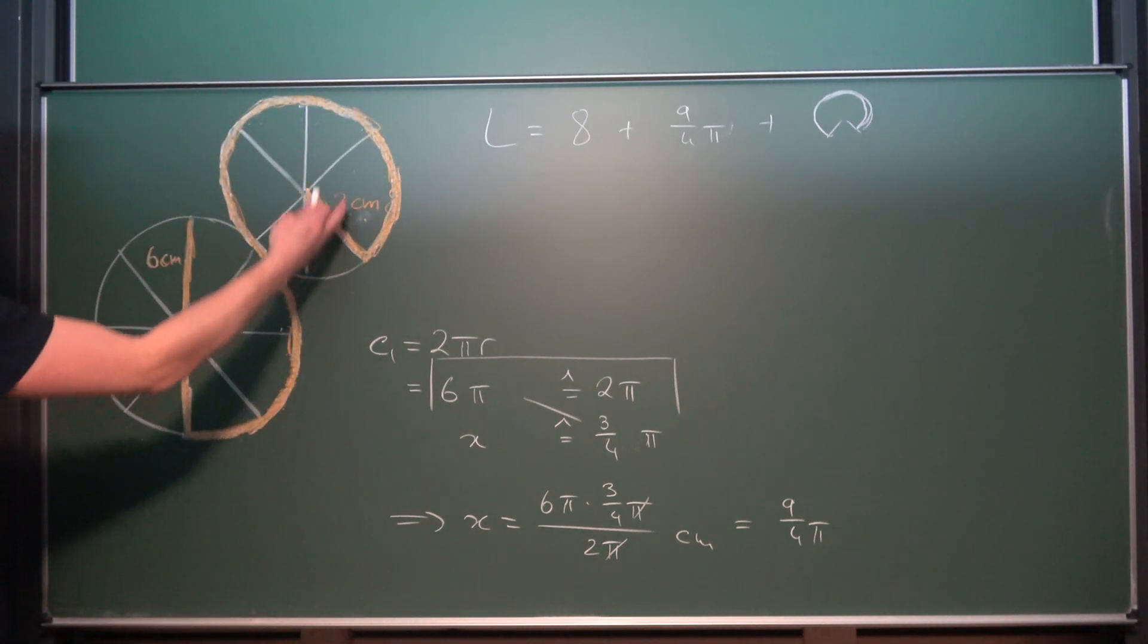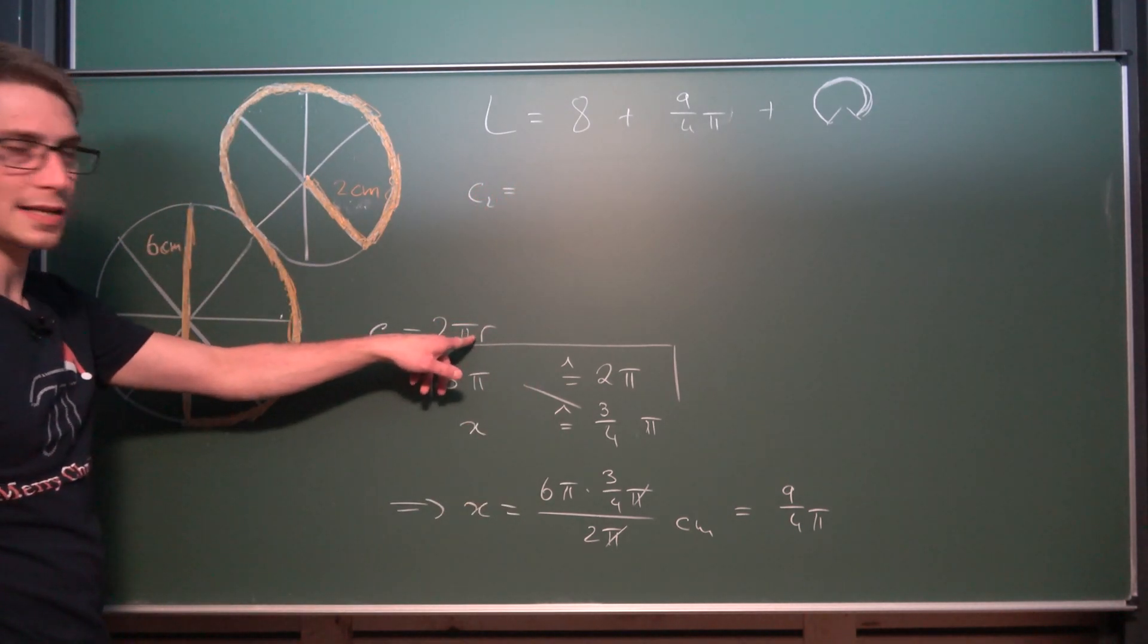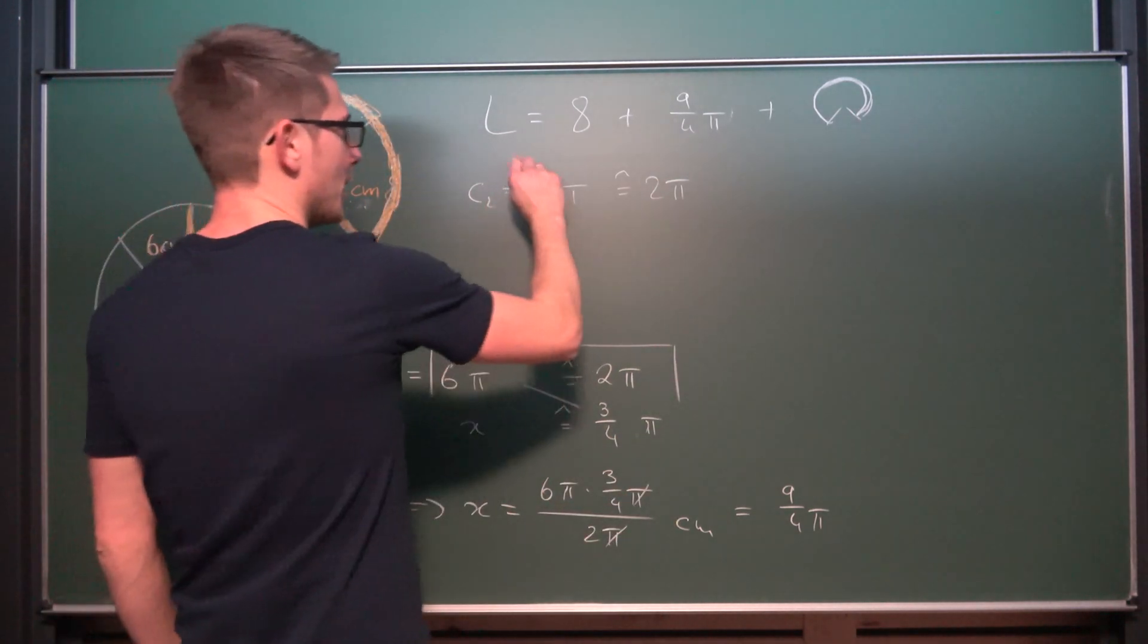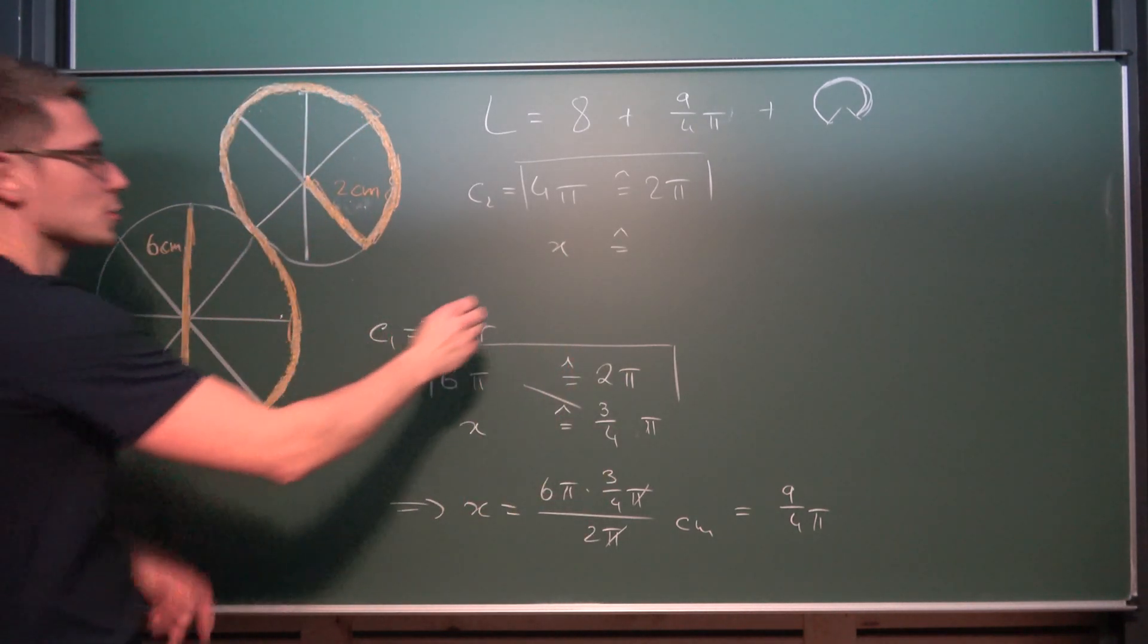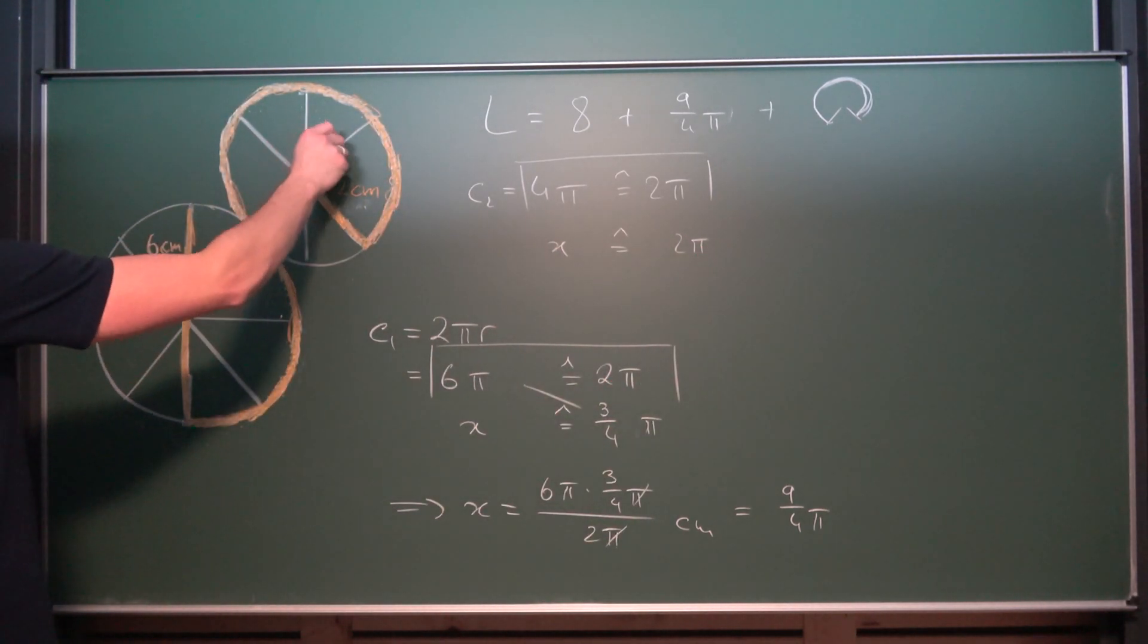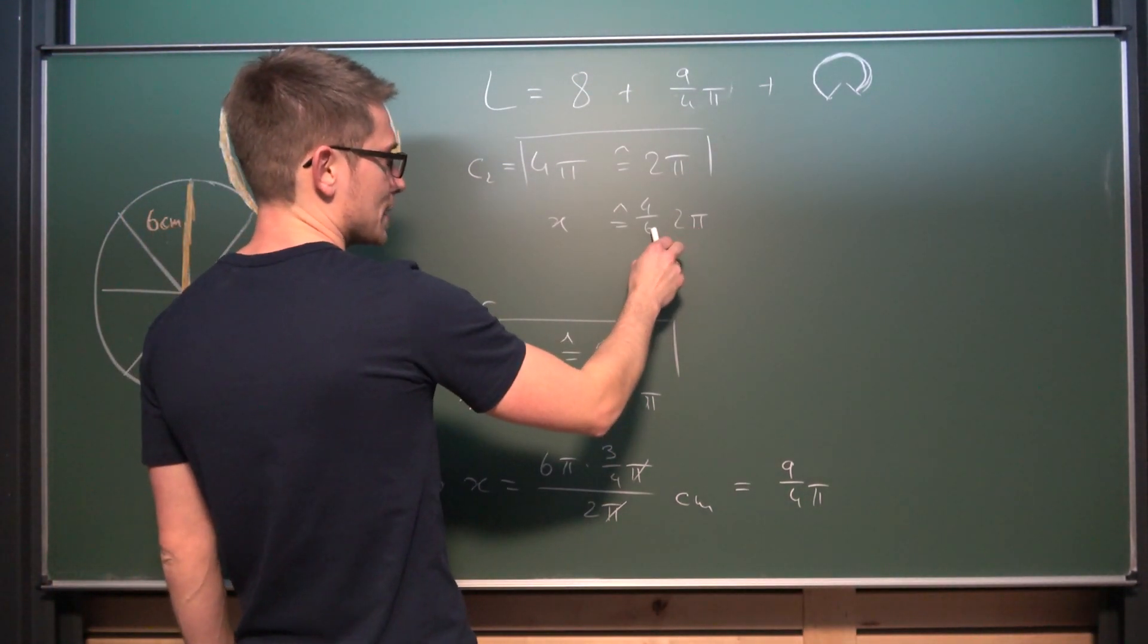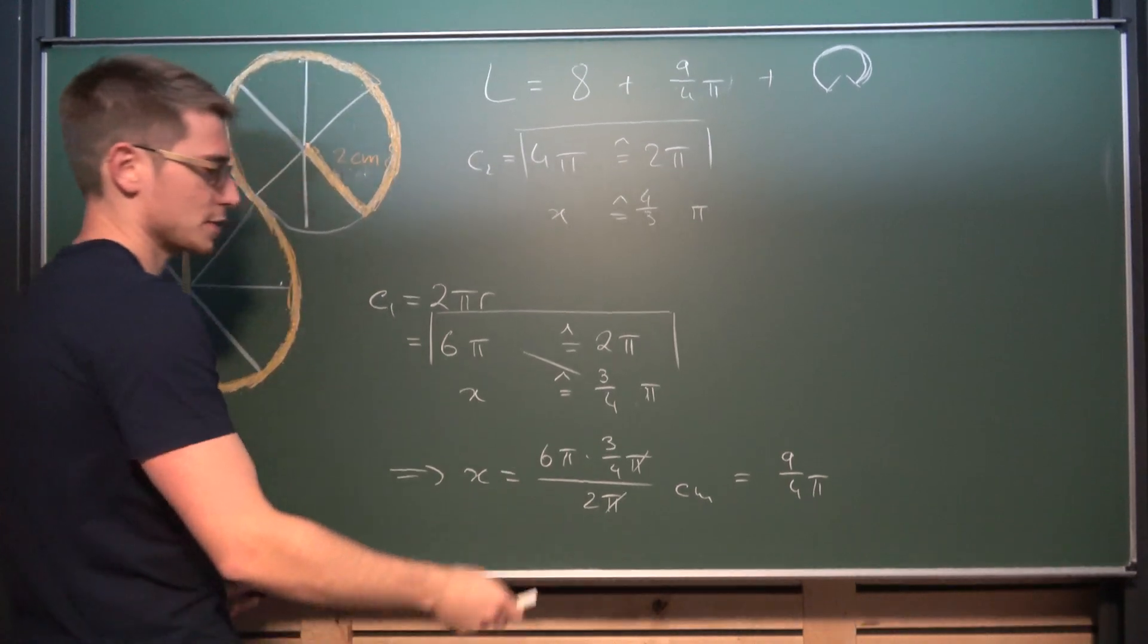Now we can go through the same procedure with this one right here. And it's very easy at that. C2 is the same as 2 times π times the radius. Radius is 2 centimeters. So 4 times π. And 4π corresponds to 2π as the radians. Now we got ourselves a second corresponding equation. We are gonna call it x once again. And this corresponds to 4 out of 6 parts. 4 out of 6. Stuff is gonna cancel out. 2 divided by 6 is gonna give us 1/3. So 4/3π.